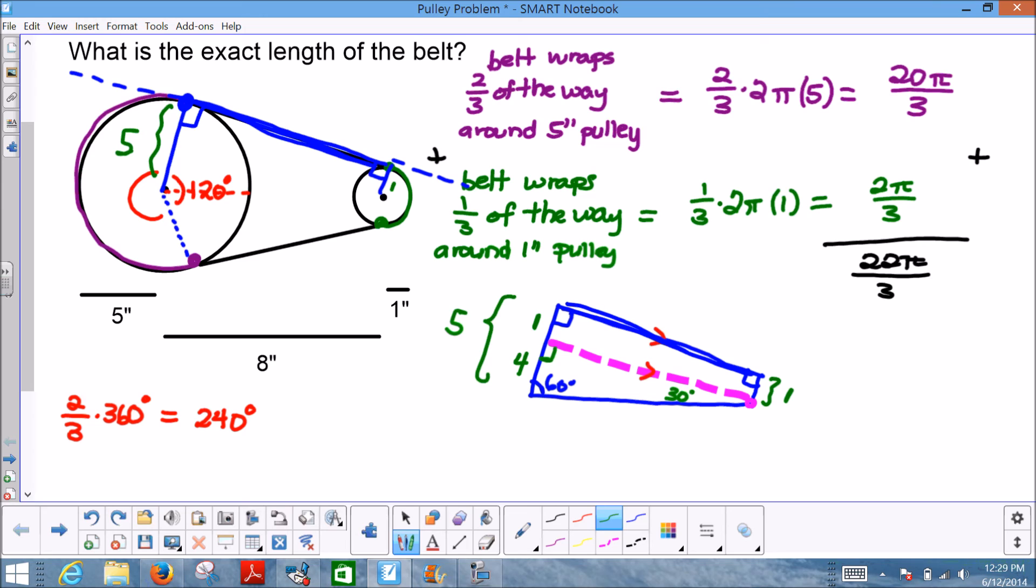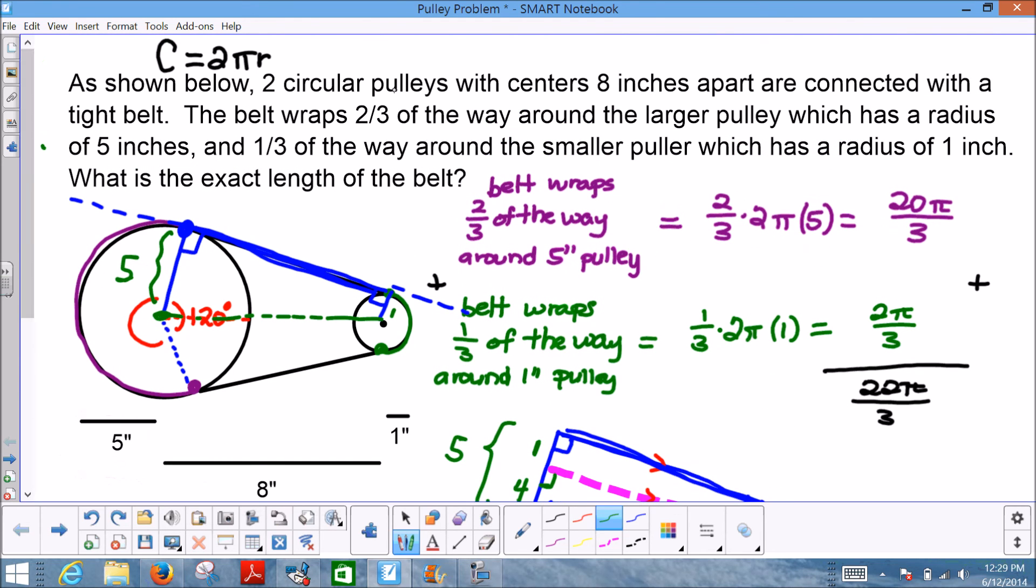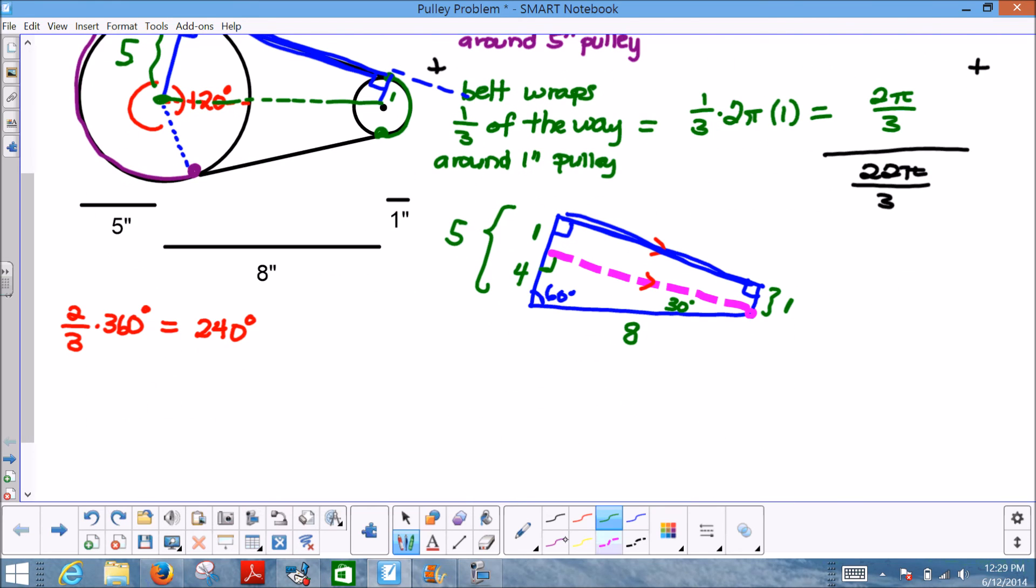The hypotenuse would be twice the length of 4, which is 8. There's no secret there because this 8 happens to be the length between the two centers in the original problem. What's important now is finding what the heck is the length of this side. Well, we just know that we would take that 4 and multiply it by √3, and hence we would have the length of the purple dashed side, which transfers over to be the length of the blue side here, which is the length of our belt: 4√3.